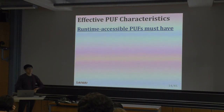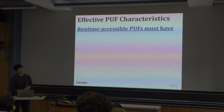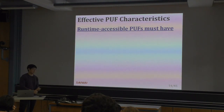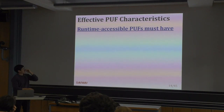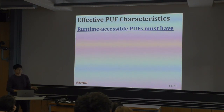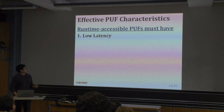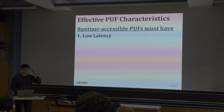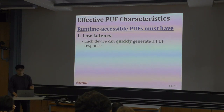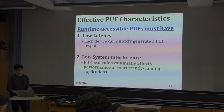We also want a runtime accessible device, which prevents attacks that happen in real time—attacks running on devices that haven't been authenticated yet. For example, if you hot-swap a device while running, you want to run PUF authentication after the swap, not just at boot time. This requires low latency to quickly authenticate a device even while other applications are running, and low system interference, where PUF evaluation minimally affects the performance of concurrently running applications.